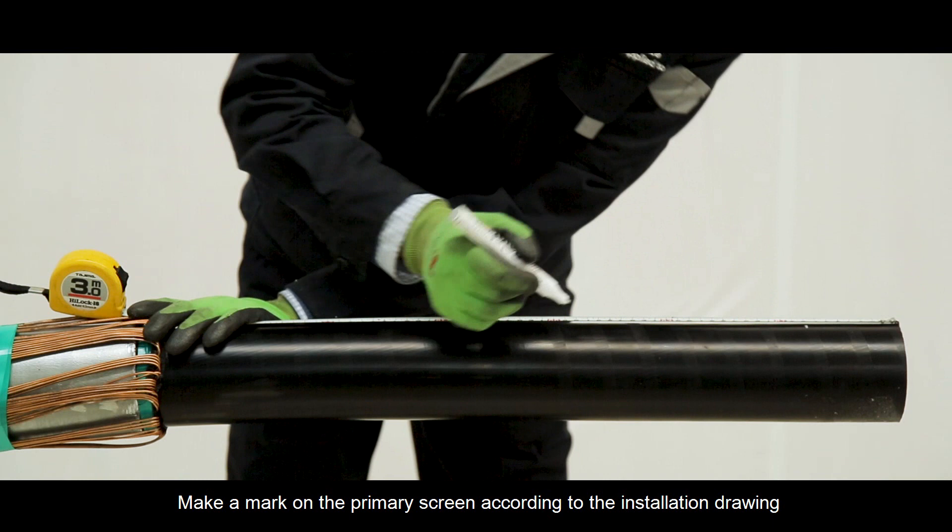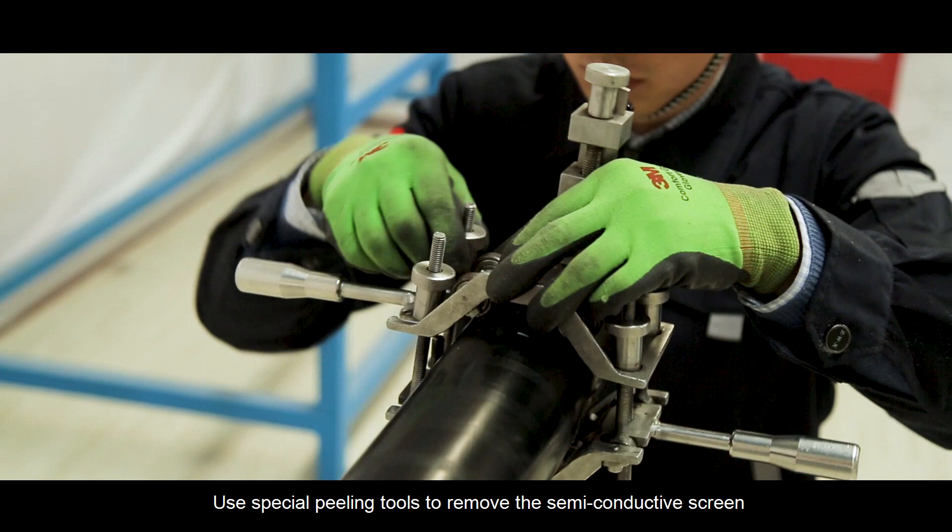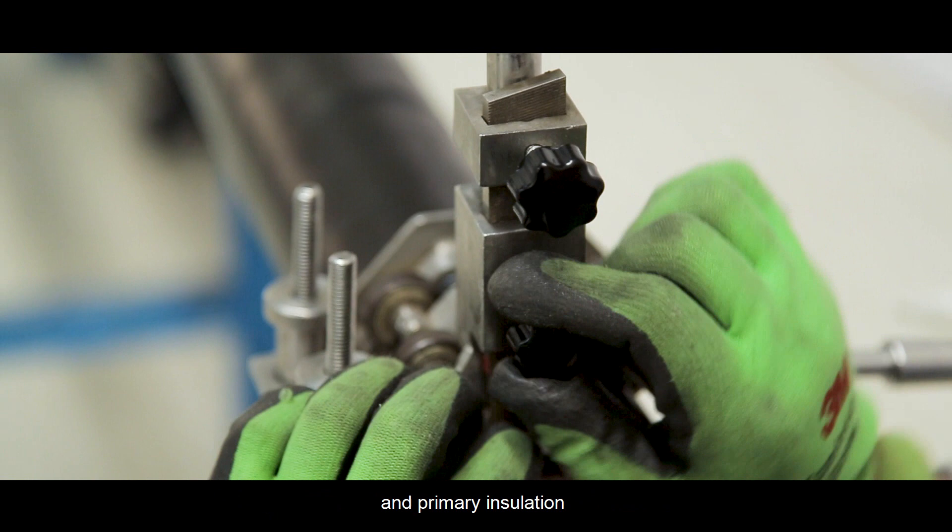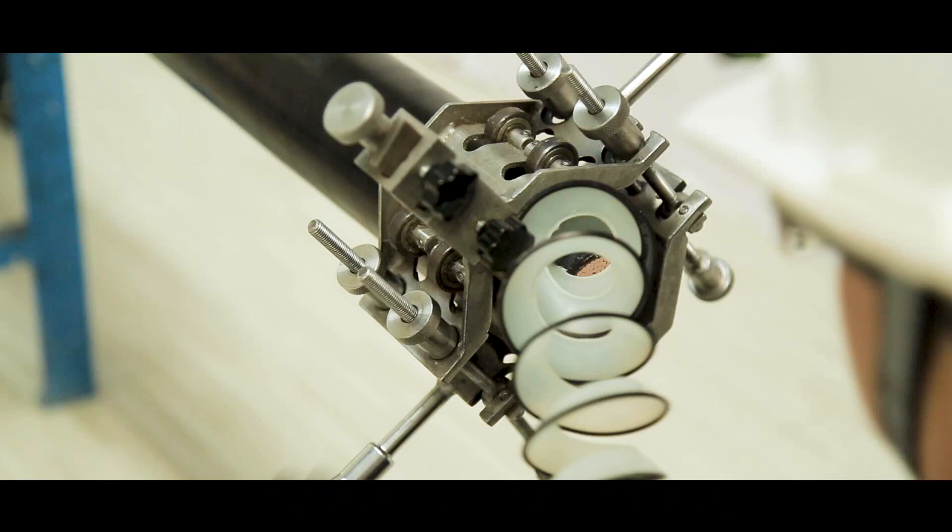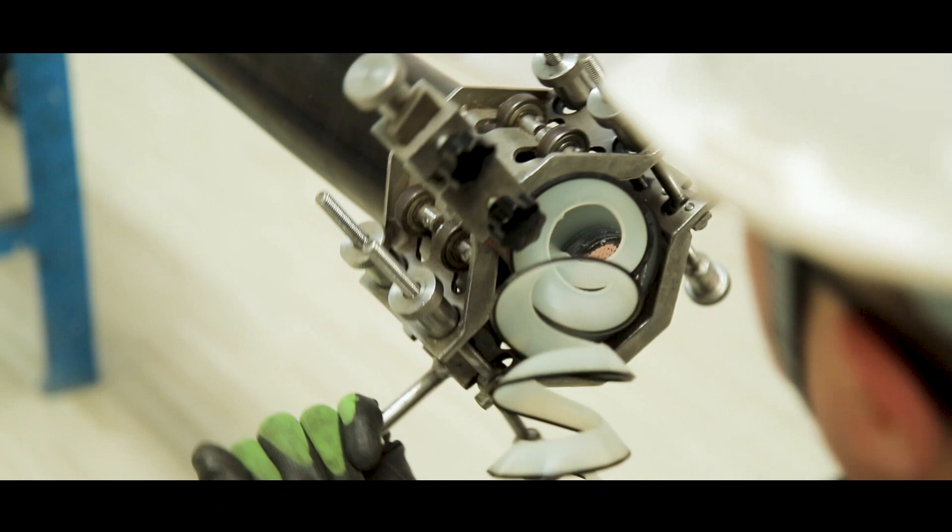Make a mark on the primary screen according to the installation drawing. Use special peeling tools to remove the semi-conductive screen and primary insulation according to the dimensions given in the installation drawing.